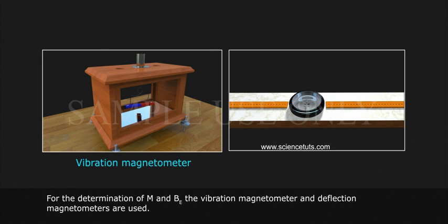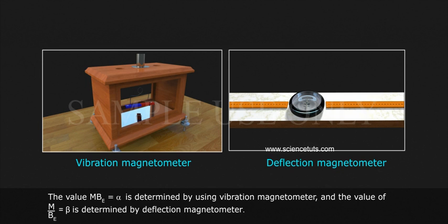the vibration magnetometer and deflection magnetometer are used. One measurement is determined by the vibration magnetometer, and another measurement is determined by deflection magnetometer.